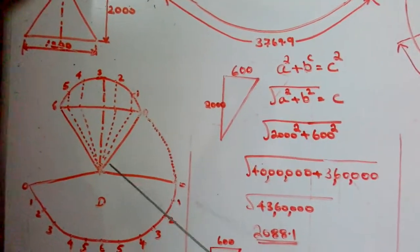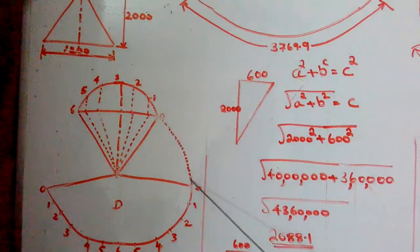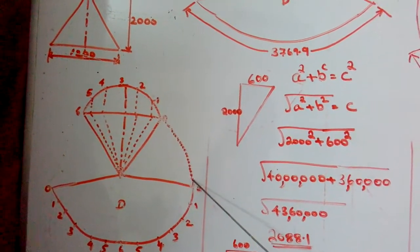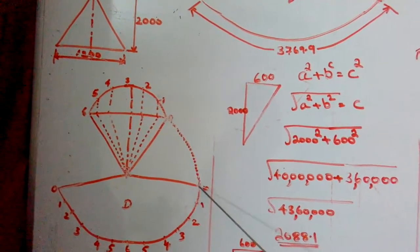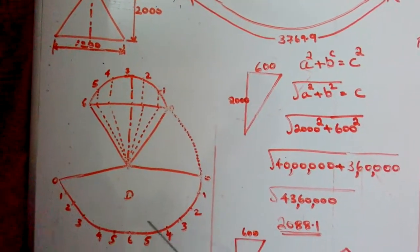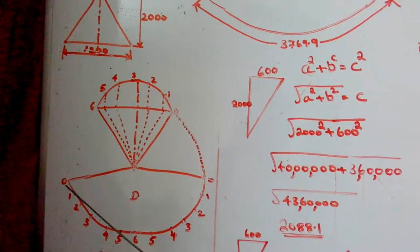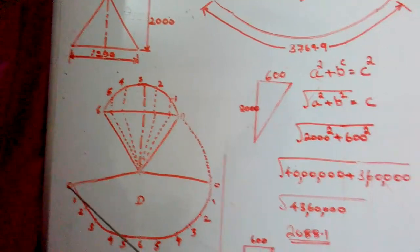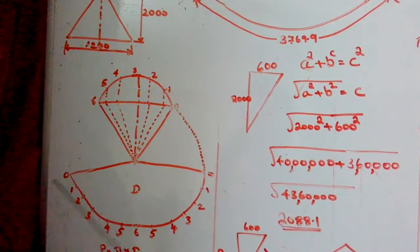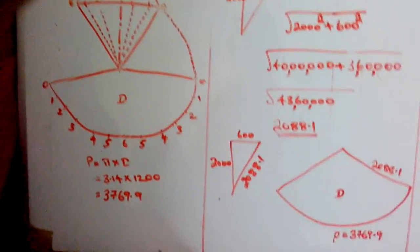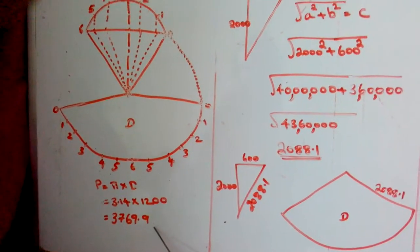We need this radius. If we have got this radius, we can draw one arc. But where should we stop this arc? For that purpose we have to get the perimeter, which is 3769.9.